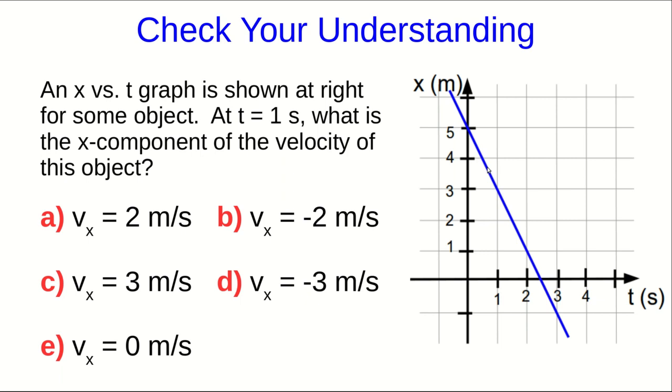the velocity at one second, or at any time, is the same as the average velocity. And so we can find the x component of the velocity just from a rise over run pulled off of the graph. So this rise over run gives me negative two meters divided by one second, and so the answer is b.